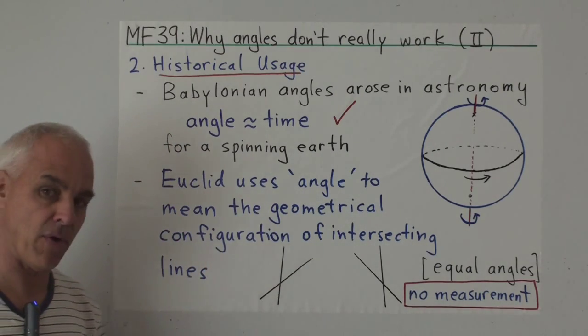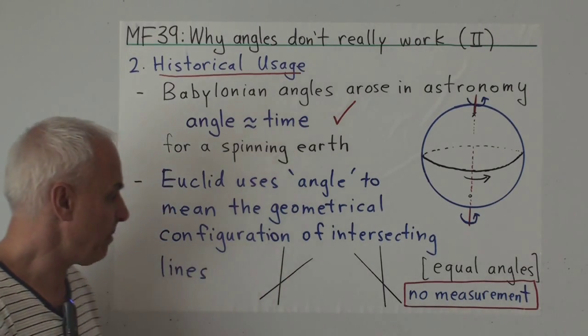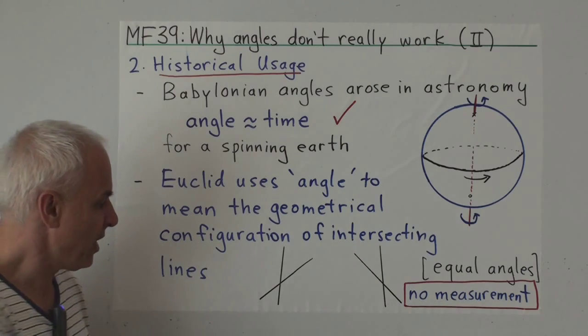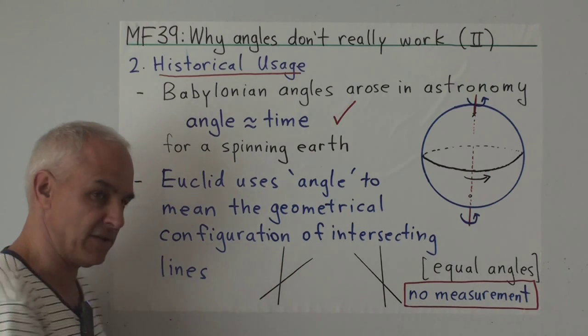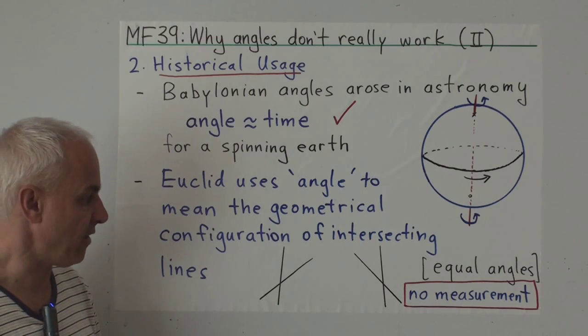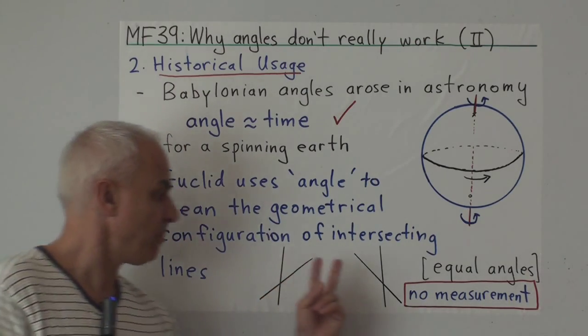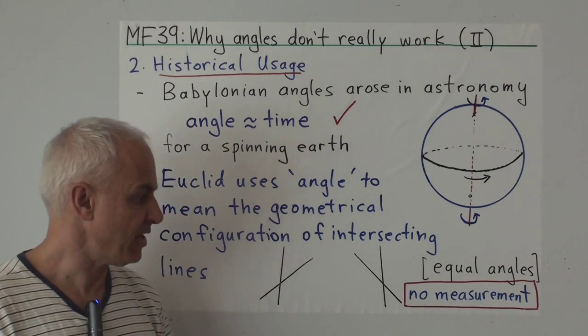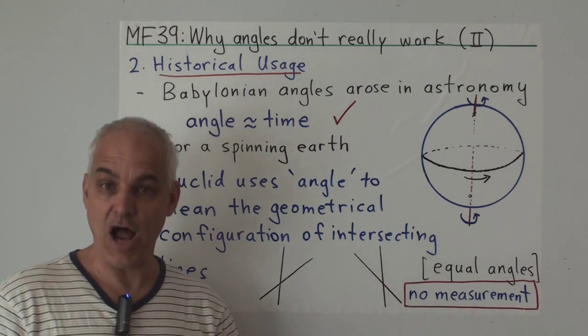There's a bit of confusion though with Euclid because the word angle is often used in translations of the Elements, but it means for Euclid the configuration, the geometrical configuration of two intersecting lines. So Euclid often refers to this picture as an angle. He's not referring to a measurement in degrees between these two lines. He's referring rather to this configuration itself. Then when he says that this and this are equal angles, he means that this configuration can be superimposed on that configuration by a congruence. He does not mean that the measurements of these two angles are the same because Euclid does not measure angles.